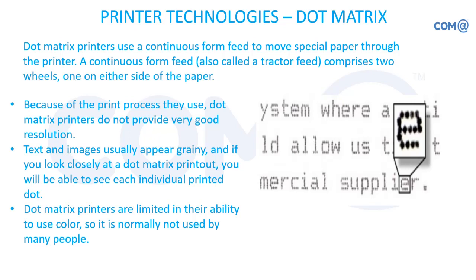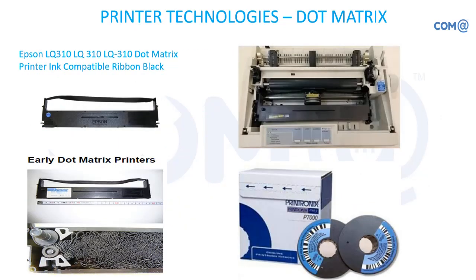Because of the print process, dot matrix will not give you a higher-quality printout — you can easily see the dots printed on the paper with the normal eye. Text and images usually appear grainy. This printer is maximum used as a black — single color, monocolor — printer because the ribbon is black, so you get only one color output. Normally, we don't prefer to go for a color dot matrix printer.